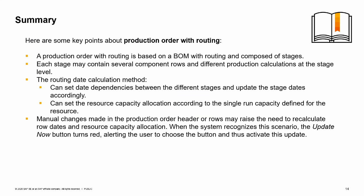Here are some key points about production orders with routing. A production order with routing is based on a BOM with routing and composed of stages. Each stage may contain several component rows and different production calculations at the stage level. The routing date calculation method can set date dependencies between different stages and update stage dates accordingly, and can set resource capacity allocation according to the single run capacity defined for the resource. Manual changes in the production order header or rows may raise the need to recalculate row dates and resource capacity allocation — when the system recognizes this, the update now button turns red, alerting the user to activate the update. You have completed the routing for production orders topic. Thank you for your time.